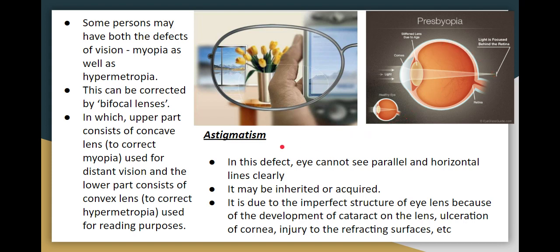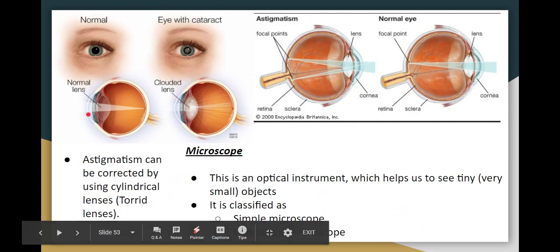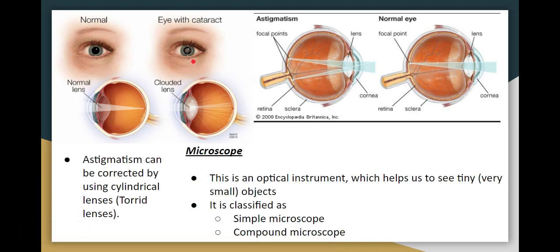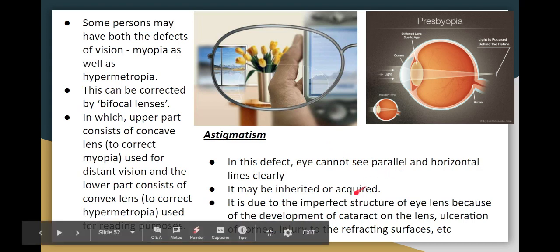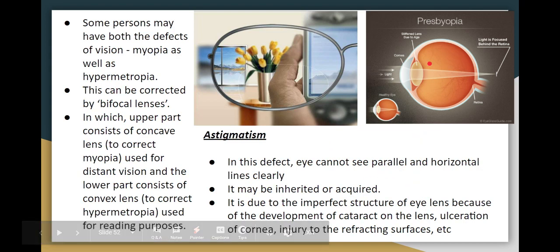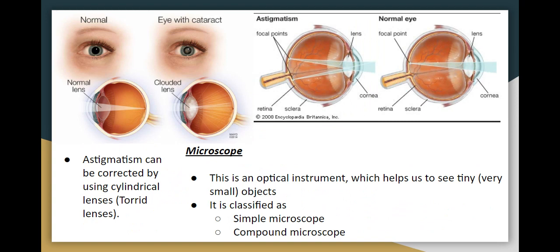Next is astigmatism. In astigmatism, the person cannot distinguish parallel or horizontal lines properly. It can be inherited. The reason is irregular structure of the eye lens or cornea — damage or ulceration of the refracting surface. In astigmatism, there are multiple focal points instead of a single converging focal point. To correct astigmatism, a cylindrical lens or toroidal lens is used.